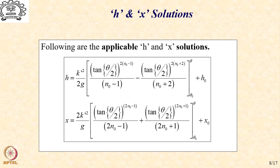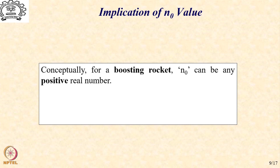The solutions for h and x are given in the next slide. I suggest you go through this exercise for your own satisfaction and to verify these two expressions. You can see that these expressions are as complicated as the expressions for the time solution and the velocity. We now come to a stage where we realize that n0 is the primary driver for all four relations: velocity, delta-t (or θ), h, and x.